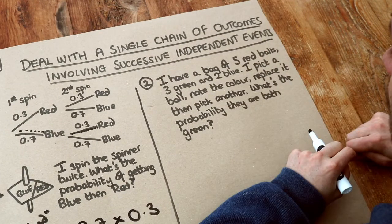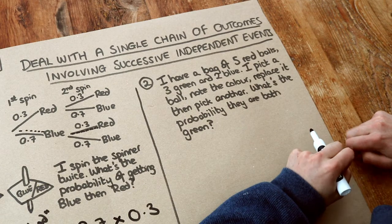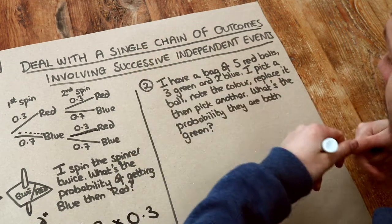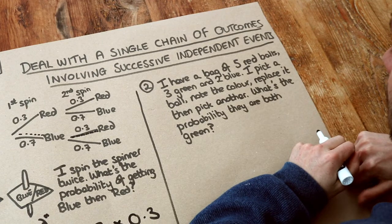So I have a bag of five red balls, three green and two blue. I pick a ball, note the color, replace it so you put it back, and then pick another. What's the probability that they're both green?